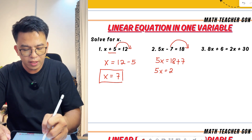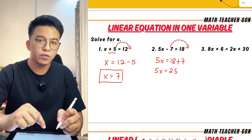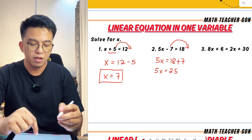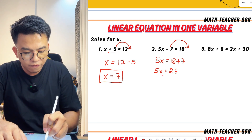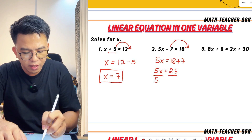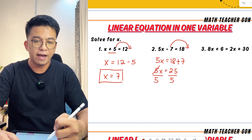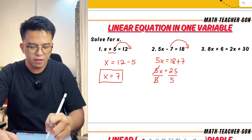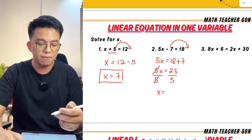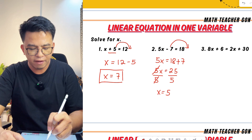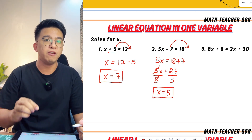18 plus 7 would be 25. So we have 5x equals 25. Now for us to get the value of x, we need to divide the whole equation by 5. We can cancel out 5 and 5, and we have x equals 25 divided by 5, that is equal to 5. The value of x in this equation is simply 5.